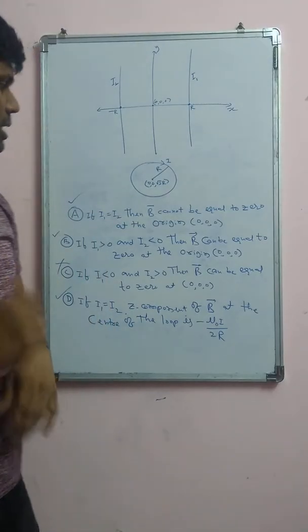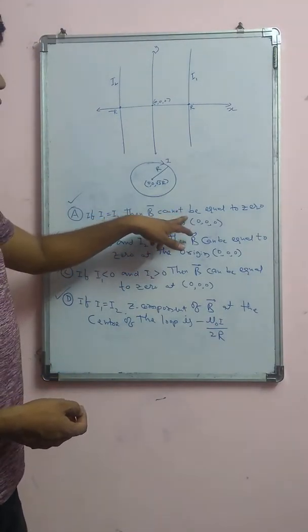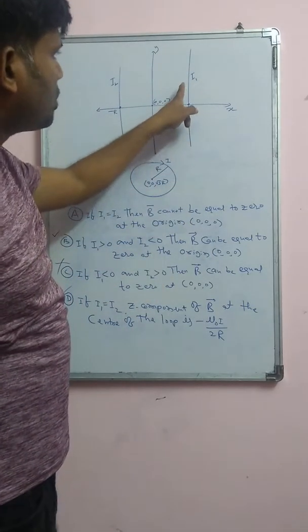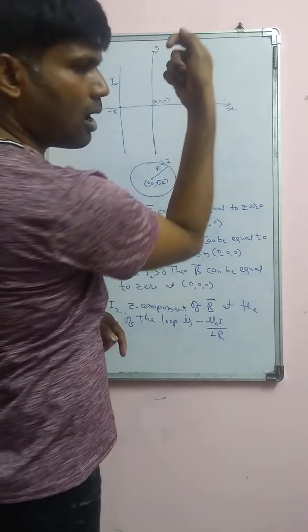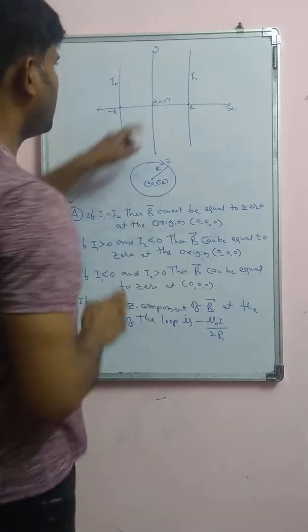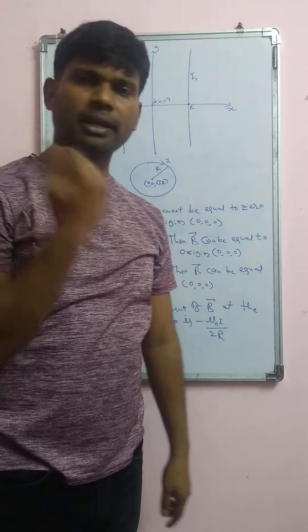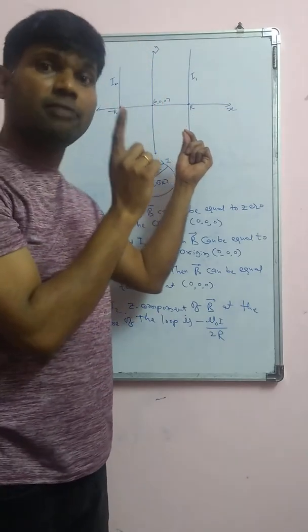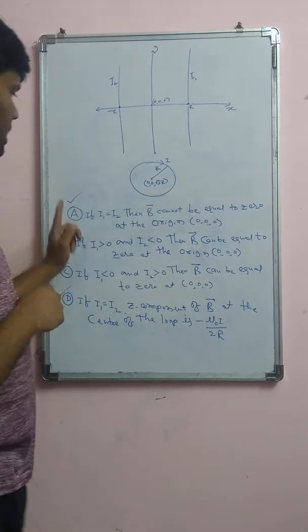For the given situation, Option A states: if i1 equals i2, then B cannot be equal to zero at the origin (0, 0, 0). If i1 equals i2, both currents are in the same direction. The magnetic fields from wire 1 and wire 2 cancel each other at the origin. However, the circular loop also contributes a magnetic field at the origin, so B cannot be zero. Therefore, Option A is correct.